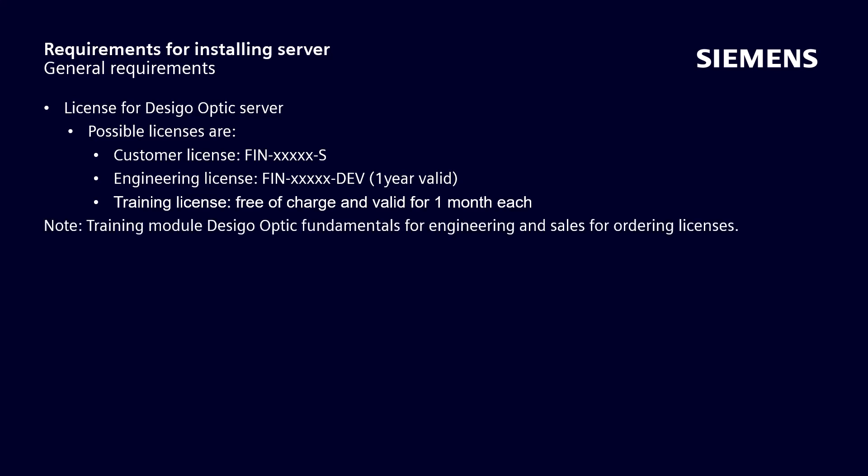Note: the information on how to order licenses is included in the Decego Optic Fundamentals for Engineering and Sales Training module. In the installation instructions, the system requirements for hardware and software for the different operating systems are shown, as well as the necessary prerequisites.